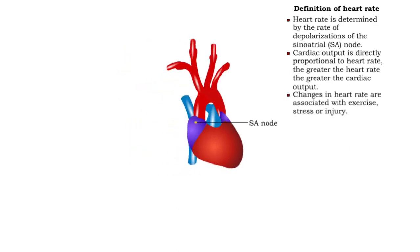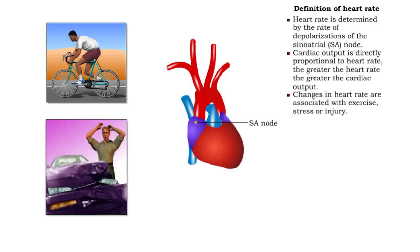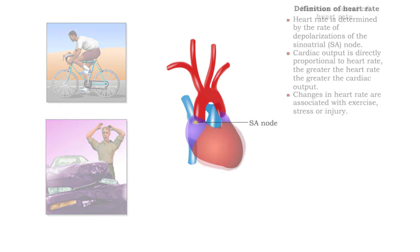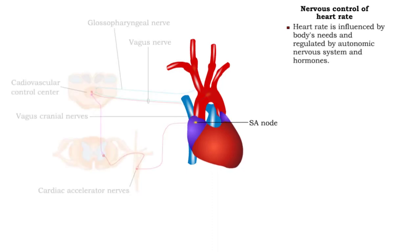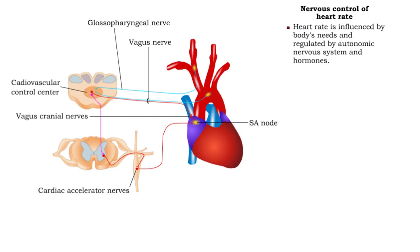Heart rate is influenced by such conditions as exercise, stress, blood loss and tissue damage. More importantly, the autonomic nervous system and hormones play key roles in the regulation of heart rate.